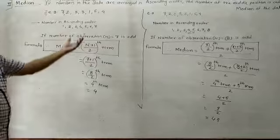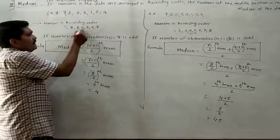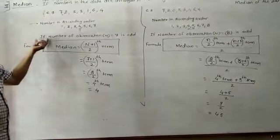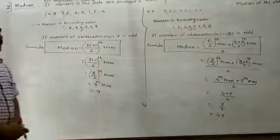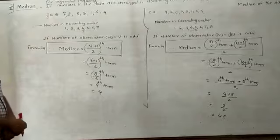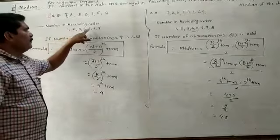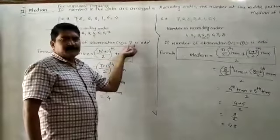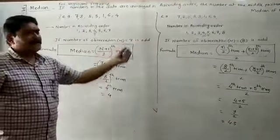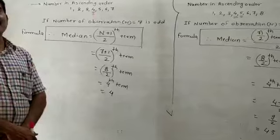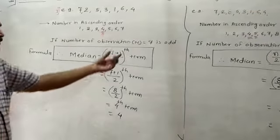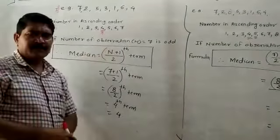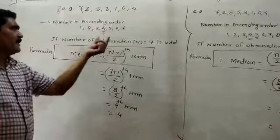For this data, 4 is the median — but let's see how using the formula. The number of observations in the given data: counting 1, 2, 3, 4, 5, 6, 7 — so n equals 7. Seven is an odd number. If the number of observations are odd, the formula for the median is the (n+1)/2 th term. With n=7: (7+1)/2 = 8/2 = 4th term. So the 4th term is the median.